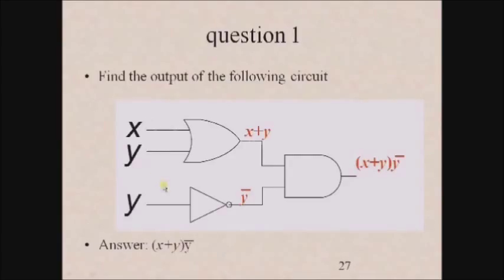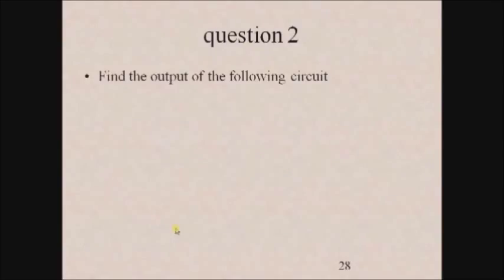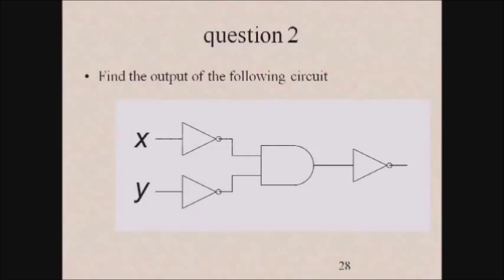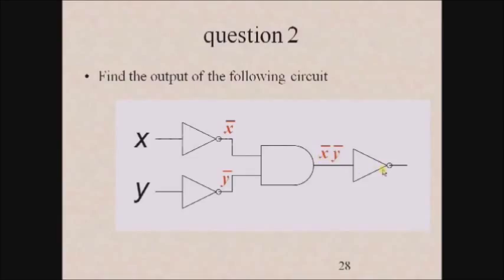Here is another example: find the output of the following circuit where x and y are input variables given to two NOT gates, and the outputs of these NOT gates are given as inputs to an AND gate, whose output is then given to another NOT gate. The output of the first NOT gate is x bar, the output of the second NOT gate is y bar, the AND gate output is x bar·y bar, and the final NOT gate output is x bar·y bar whole bar.